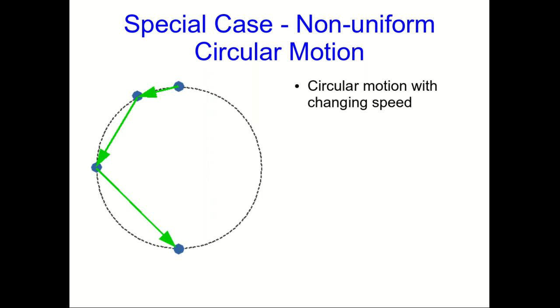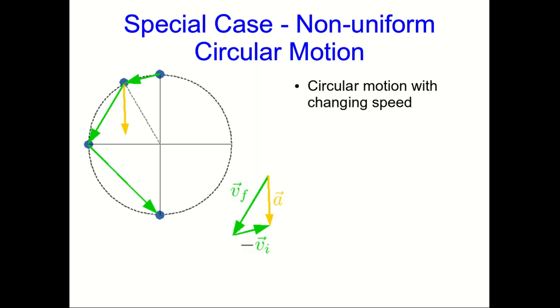A final special case that we'll spend some time on is non-uniform circular motion, which just means circular motion with a changing speed. So here's a motion diagram for circular motion where this object is speeding up as it goes around the circle. And we can find the acceleration as usual at one point by just carrying out the usual vector subtraction.